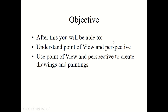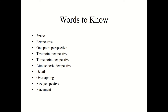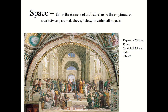After this you will be able to understand point of view and perspective and use them to create drawings and paintings, which will be in parts two and three. Here are some words to know — pause it to review them. Space is the element of art that refers to the emptiness or area between, around, above, below, or within all objects. Here's another example: Raphael's School of Athens, which, like the Last Supper, contains all the elements to create space.